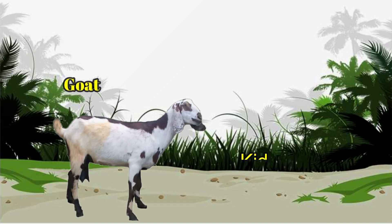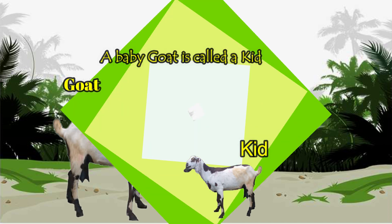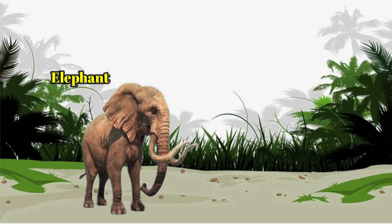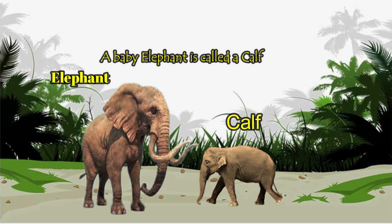Goat. Kid. A baby goat is called a kid. Elephant. Calf. A baby elephant is called a calf.